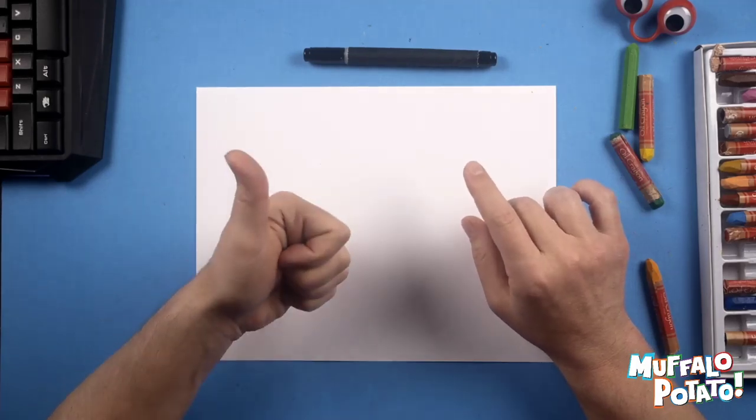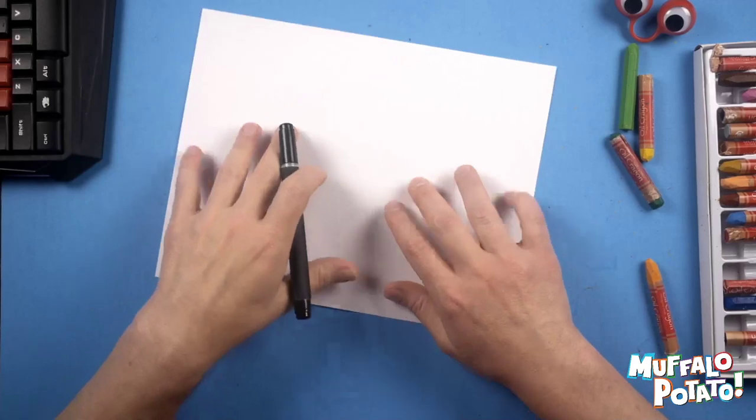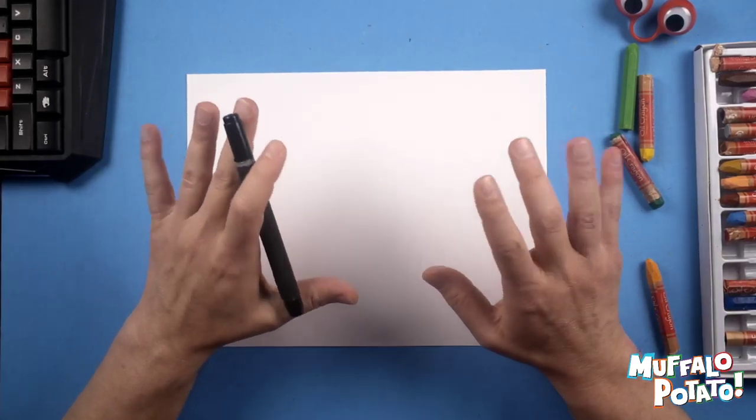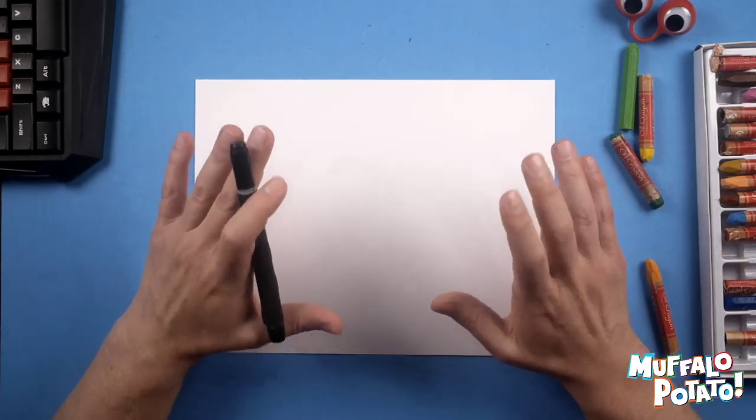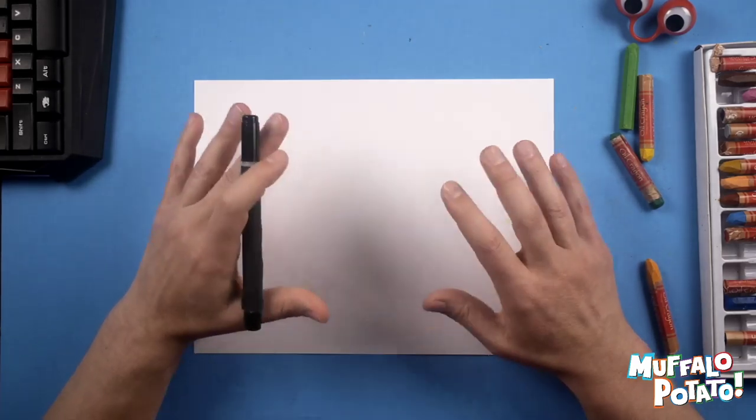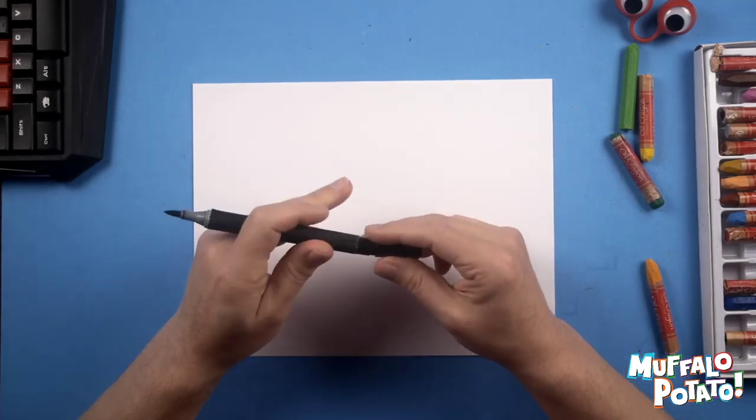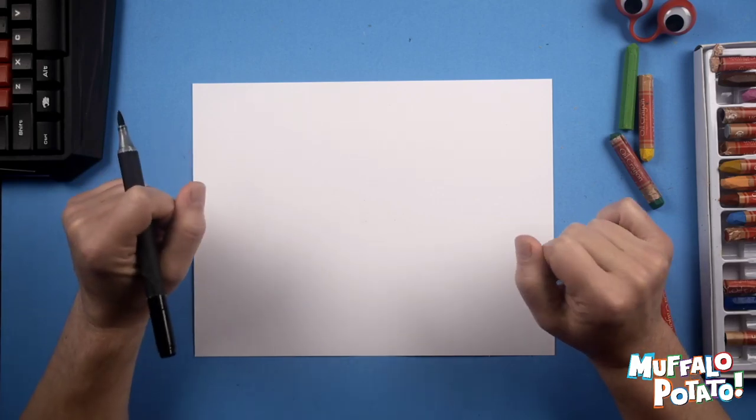I think I can show you guys how to draw Thor using nothing but numbers and letters. So you need three things: a pen, a piece of paper, and you need to watch me. Let's do it! There's gonna be a lot of little steps, but I'm pretty sure we can figure out how to draw Marvel superhero Thor from the Avengers. I'm gonna give him the nice winged steel helmet from the comic book.